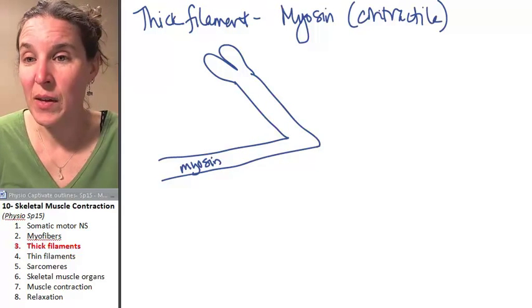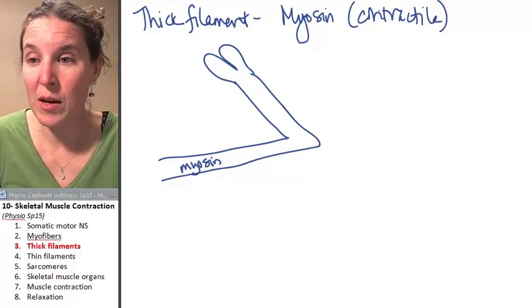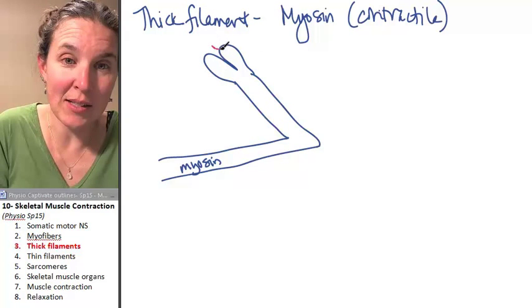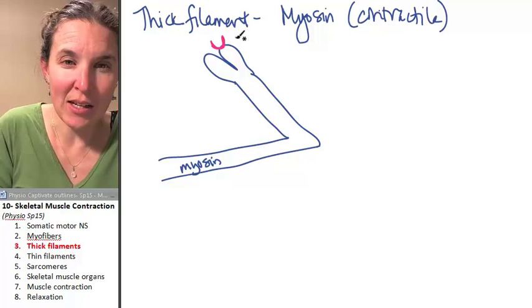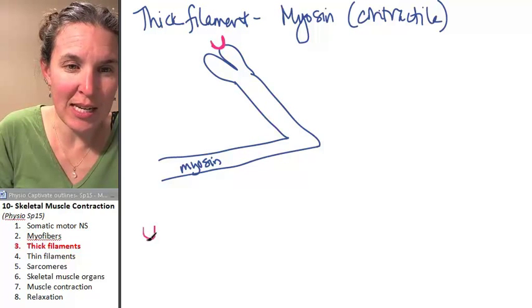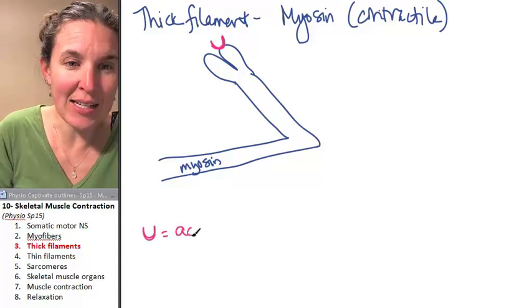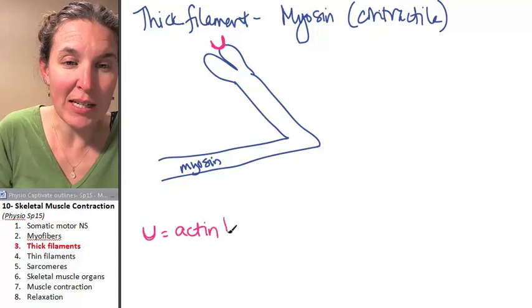Here's the deal. First of all, there are a couple of binding sites on myosin. First of all, it has a binding site for actin. So I'm going to make a little key down here. This is an actin binding site.